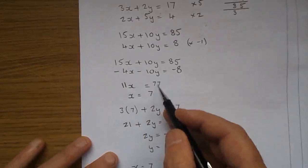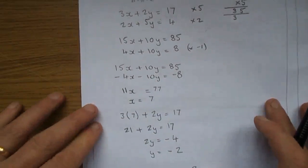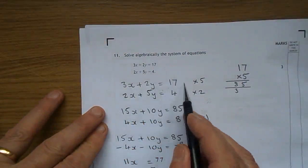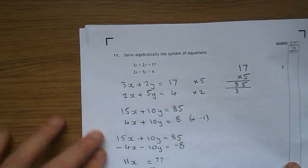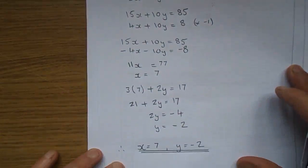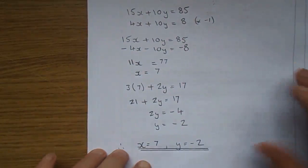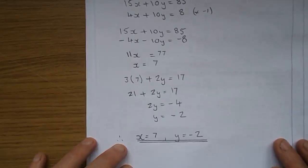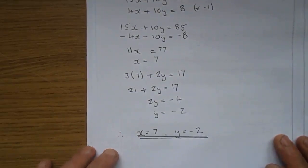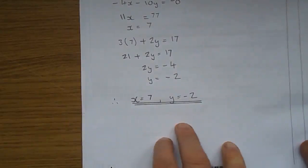11 into 77 is 7. Then I can go back to any equation to get y, and I'll pick the one with the easiest numbers. 3x plus 2y equals 17. If x is 7, 3 times 7 is 21, plus 2y gives 17. 2y would be minus 4, so y would be minus 2. Therefore x is 7 and y is minus 2.